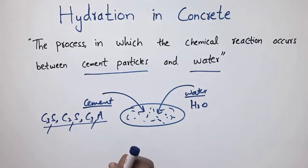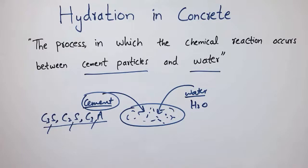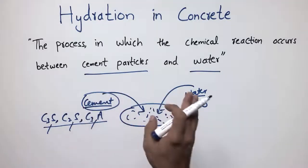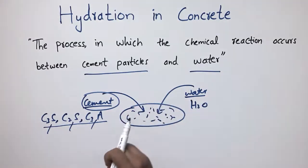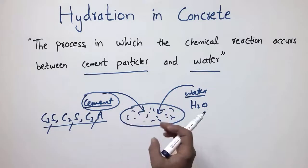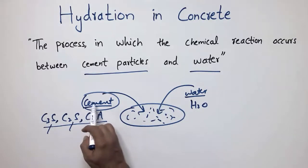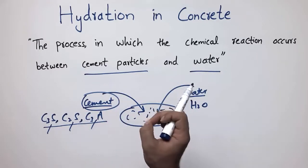A third factor is the fineness of the cement. The finer the cement, the more hydration process occurs. It should be kept in mind that hydration reaction in concrete also depends on particle size distribution. If you have very fine cement particles, you get a different hydration reaction compared to when you have coarser cement particles.